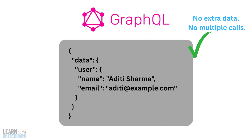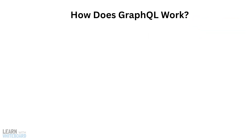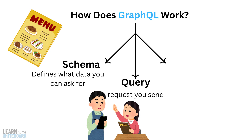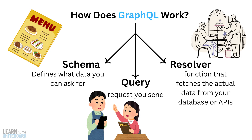How does GraphQL work? GraphQL has three main parts. Schema, which defines what data you can ask for, like a menu. Query, which is the request you send, like ordering from the menu. And Resolver, which is the function that fetches the actual data from your database or an API.